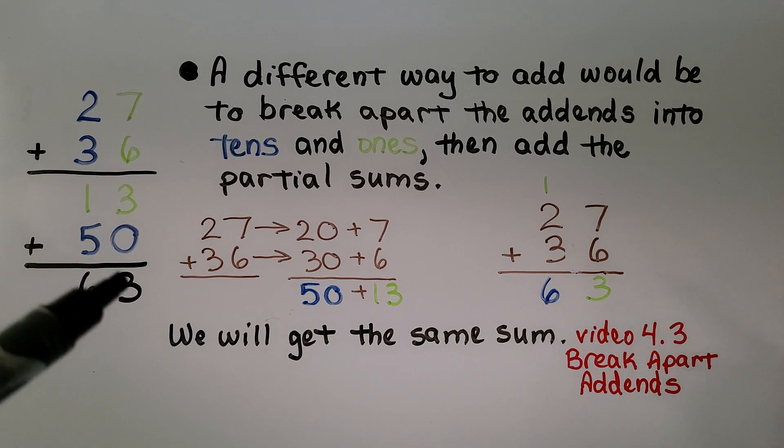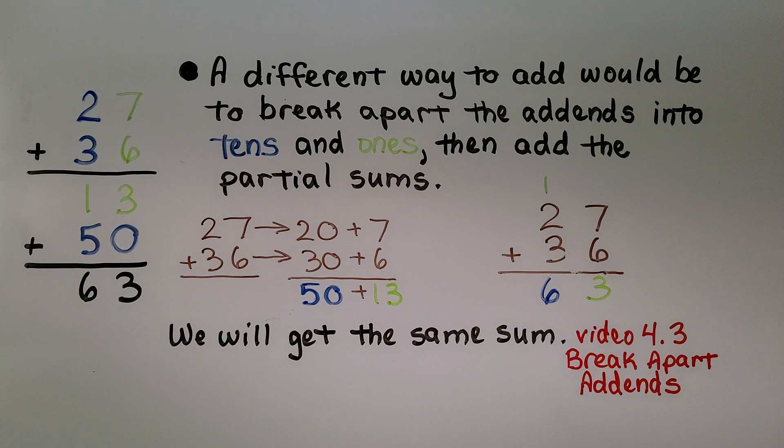We write the 5 in the tens column and a 0 in the ones. Now we add them. 3 plus 0 is 3. 1 plus 5 is 6. 27 plus 36 is equal to 63.